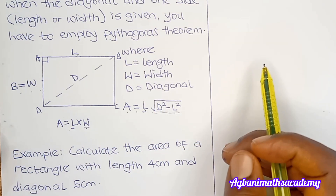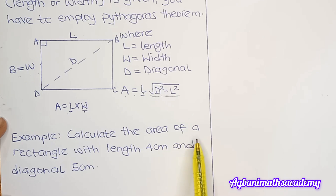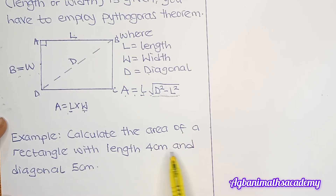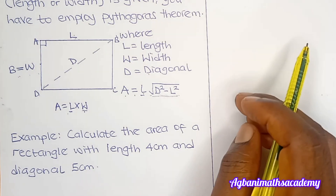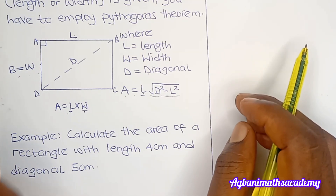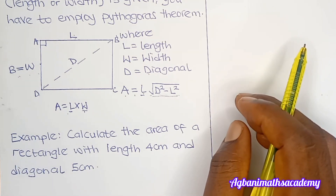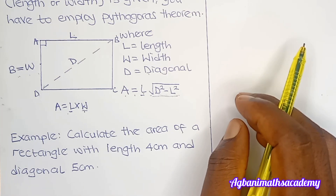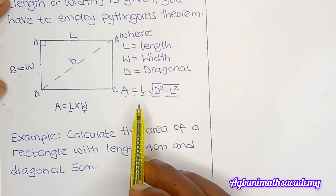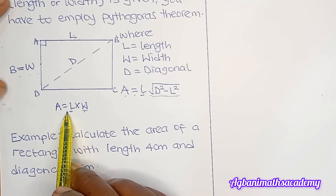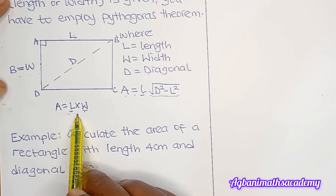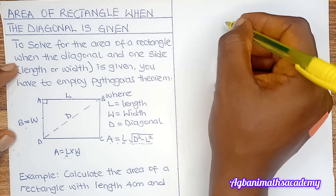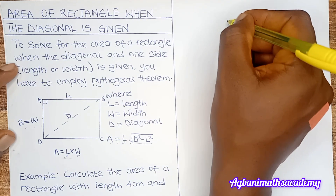Let's look at how to solve this example. We are told to calculate the area of a rectangle with length 4 centimeters and diagonal 5 centimeters. In this question we are given the length and the diagonal, but we are not given the width, so we apply the Pythagoras-based formula — we cannot apply the simple length times width formula directly.